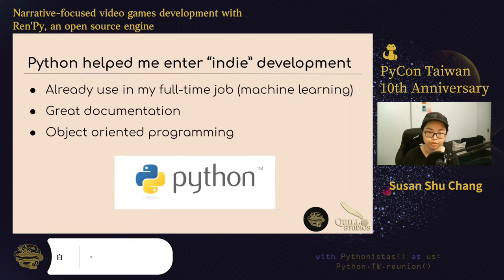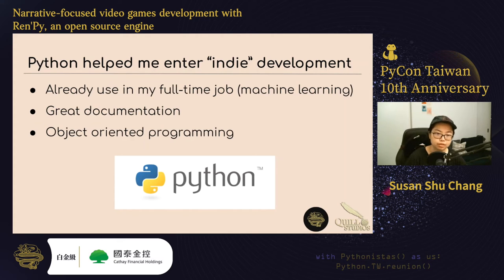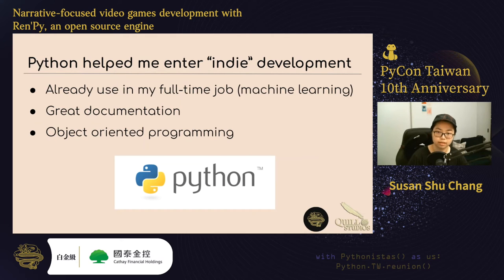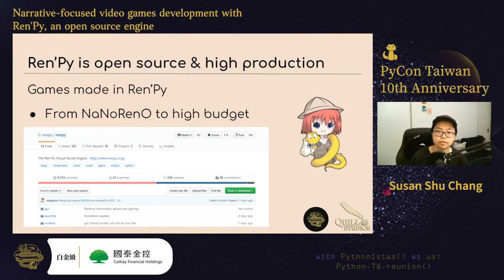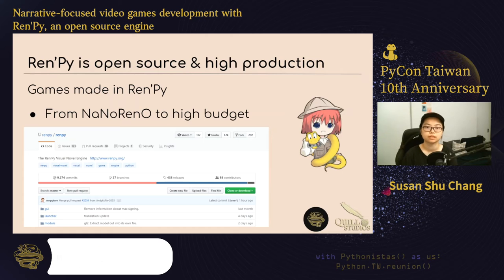当然也有 object-oriented programming。Python 或者是其他比较大的游戏引擎像是 Unreal Engine 或者是 Unity Engine，他们用的是 C++ 或者是 C#，然后他们设计的 philosophy 当然都是 object-oriented，所以其实这些东西在 Python 也可以做得来。